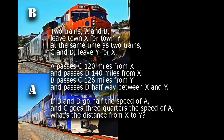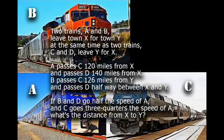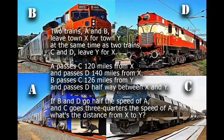Two trains, A and B, leave town X for town Y at the same time as two trains, C and D, leave Y for X.